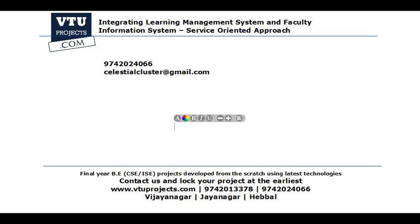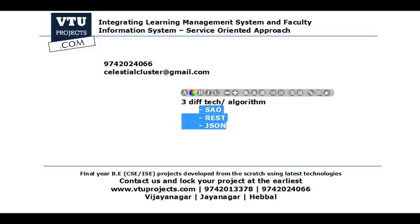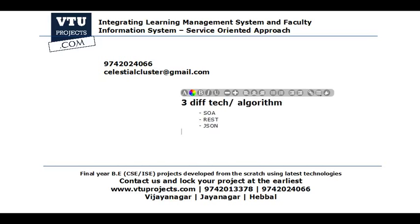Before we begin, some quick facts about this project: this project uses three different technologies or algorithms. Our project is based on three core algorithms — one is SOA, another is REST, and the other is JSON. If they ask you about the technologies, your answer should be that the project is based on three technologies: SOA, which stands for Service Oriented Architecture; REST, which stands for Representational State Transfer; and JSON, which stands for JavaScript Object Notation.